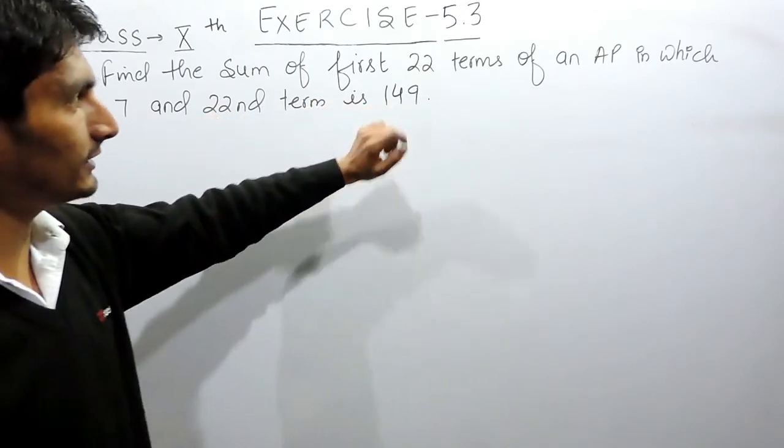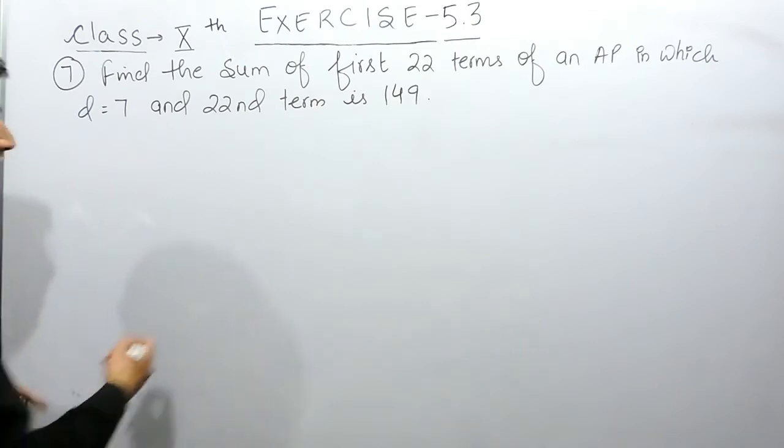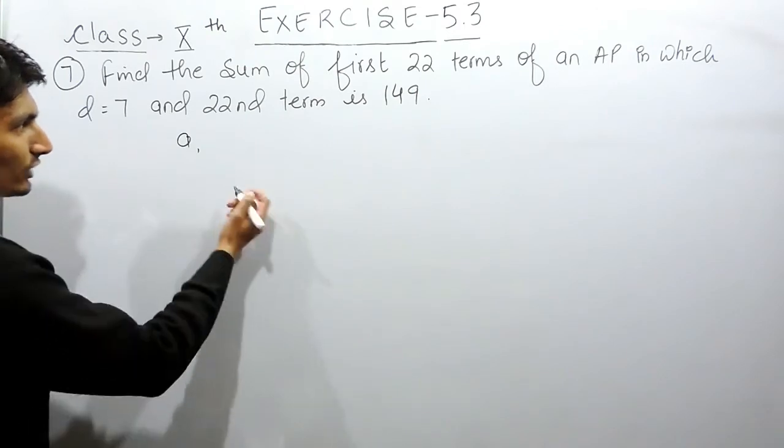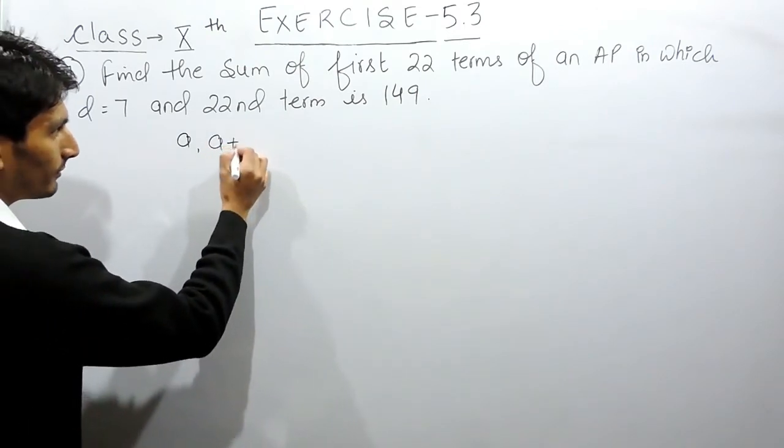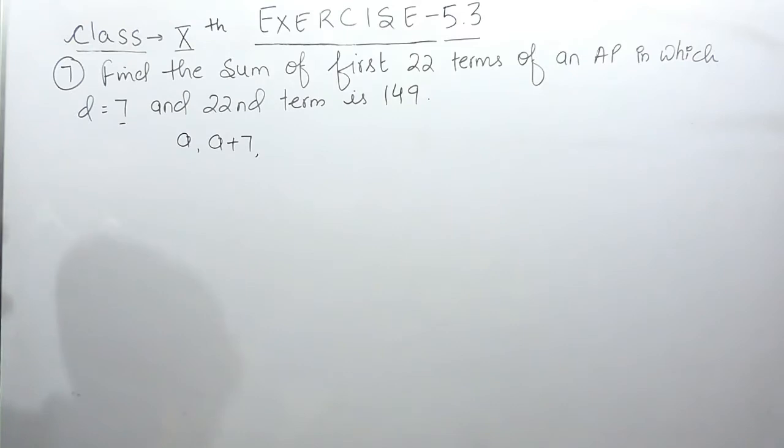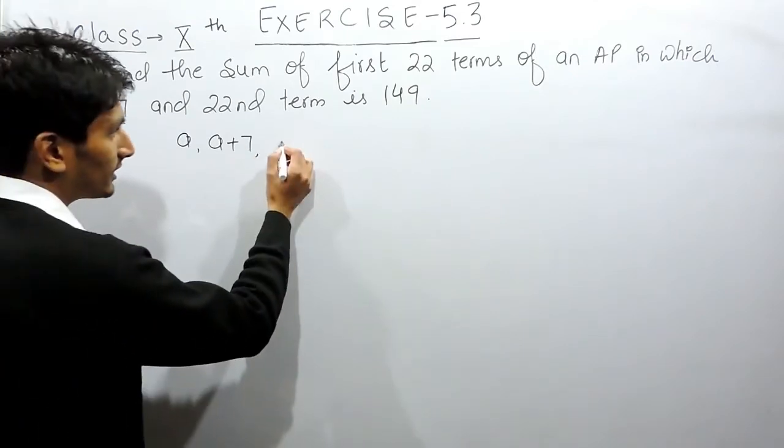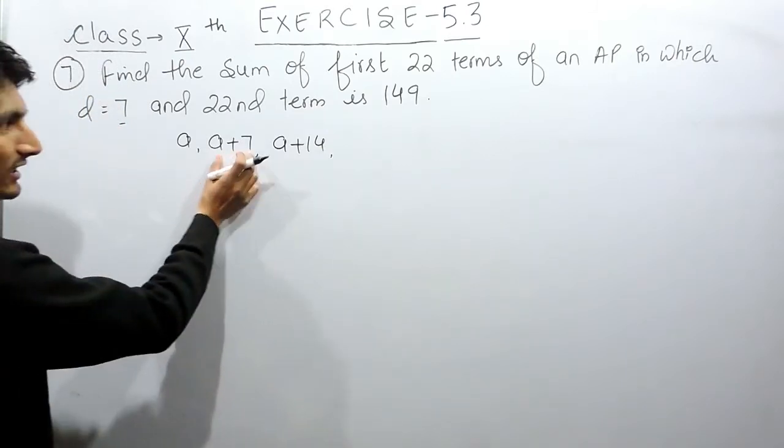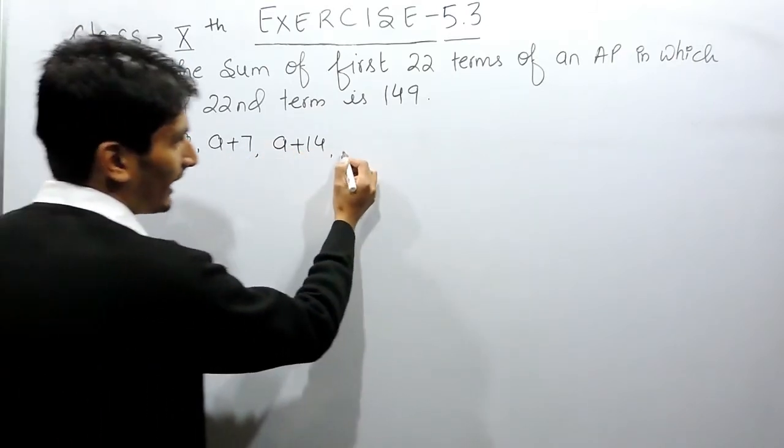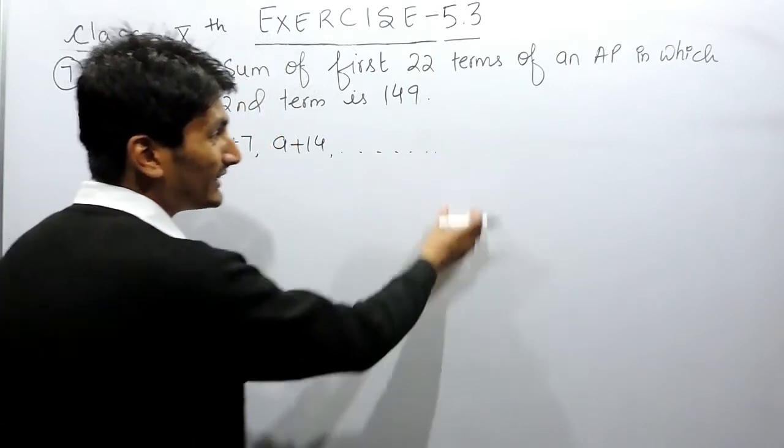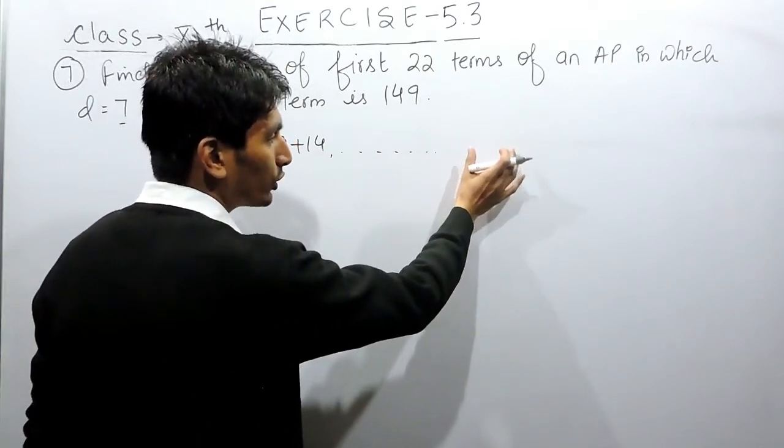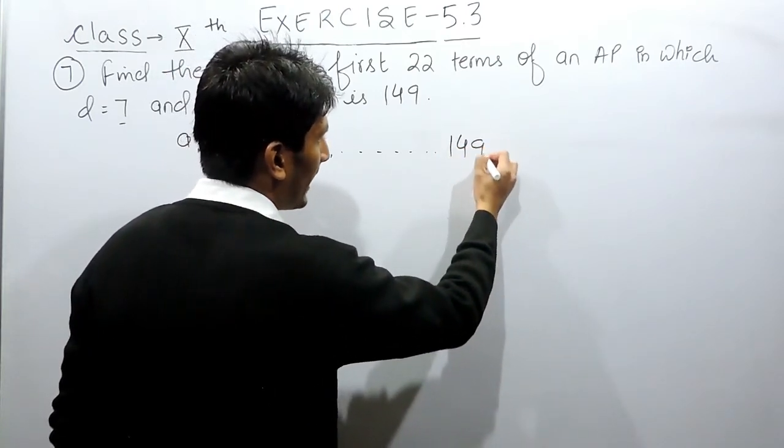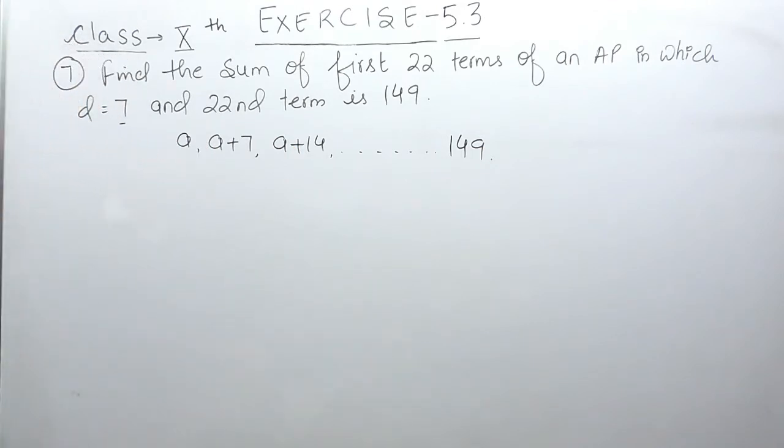An AP is given to you where the first term we consider as A. To find the second term, we must have added 7 to this because the common difference is 7. The third term must be A plus 14 because we have to add another 7 to the second term, and this process is continued till the 22nd term is calculated, which is given as 149.